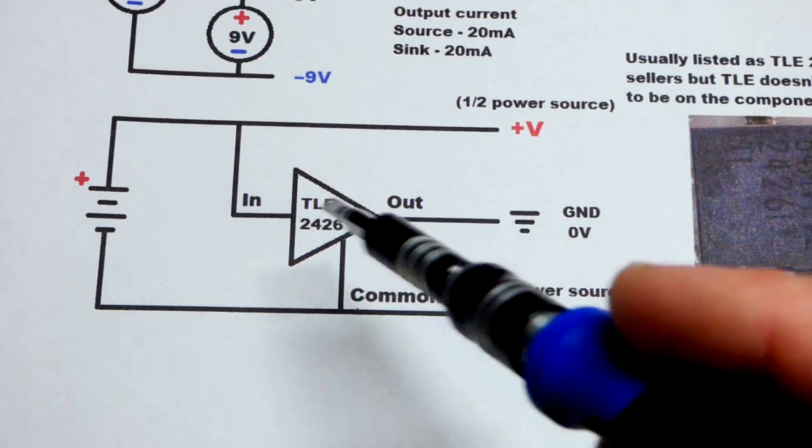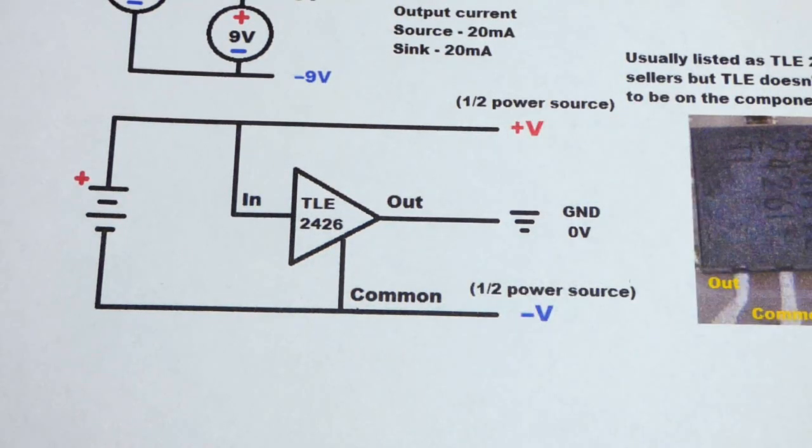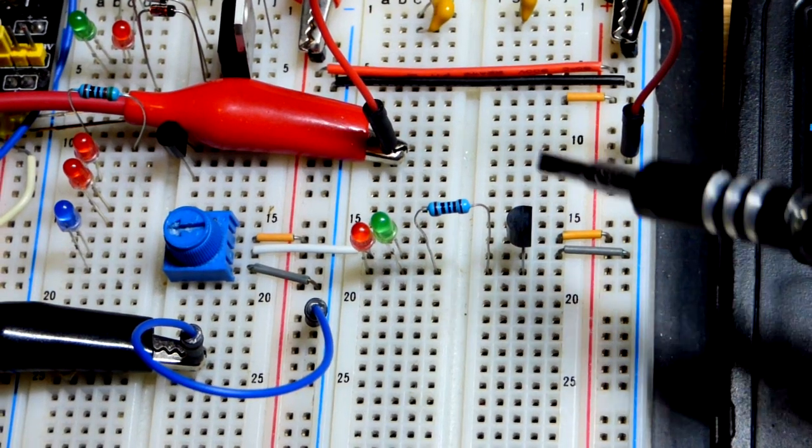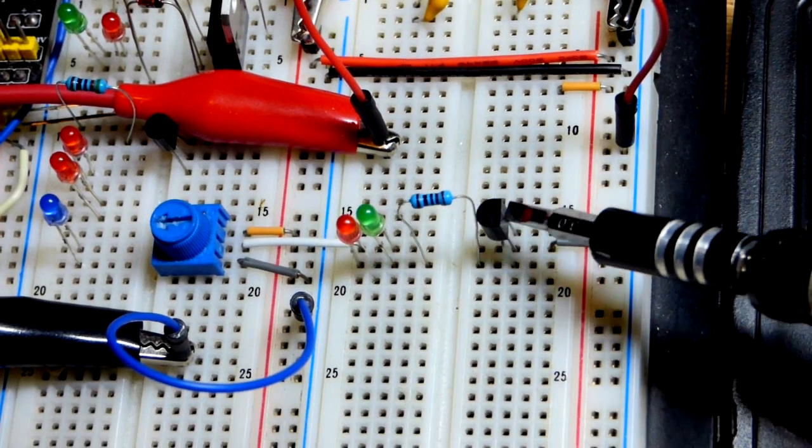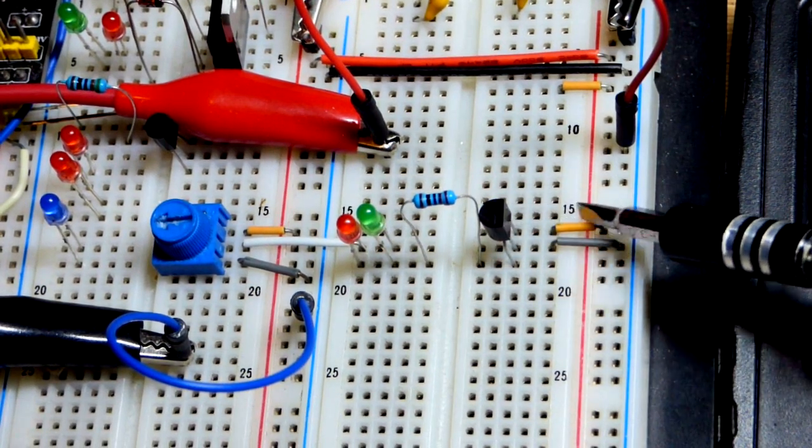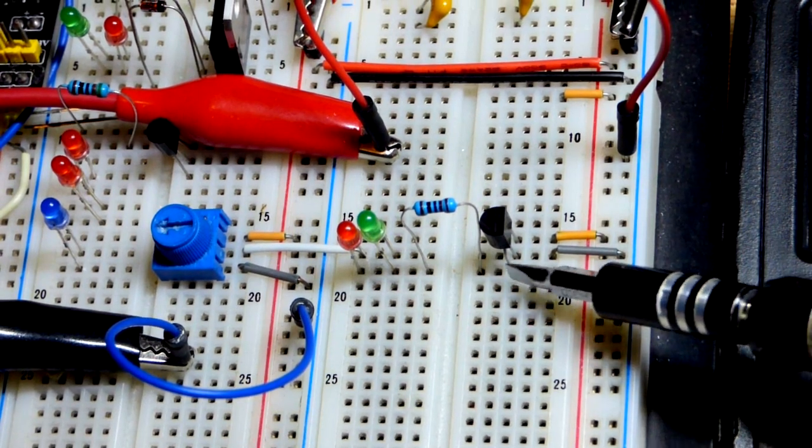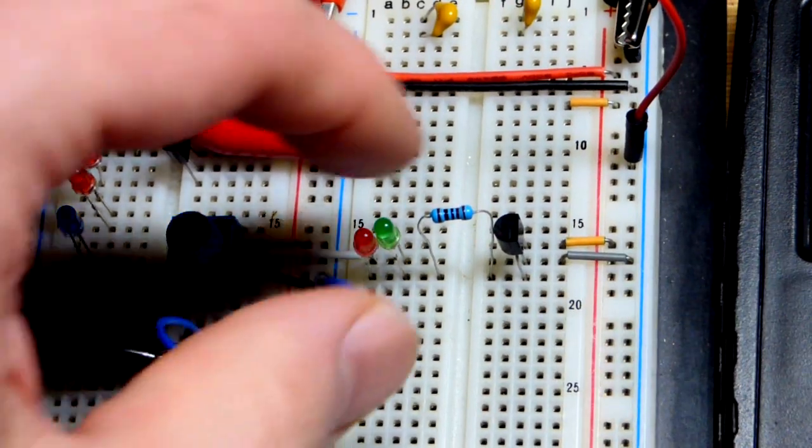A lot of op-amps are made for this split or dual supply. For the demonstration, I put the TLE 2426 over here. We have the in on top, the common in the middle, and the out at the bottom.